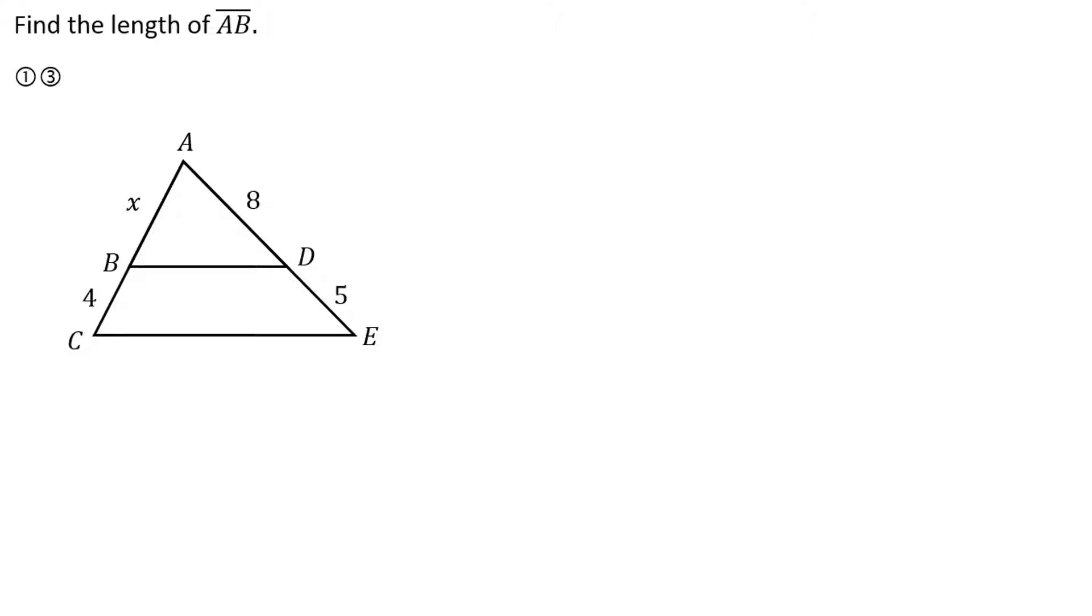This one looks quick and easy. X compares to 4 the same way that 8 compares to 5. Cross multiply. And I guess the only part that's a little bit sneaky is when I take 32 and divide it by 5, it does not come out to be a whole number. 6.4.